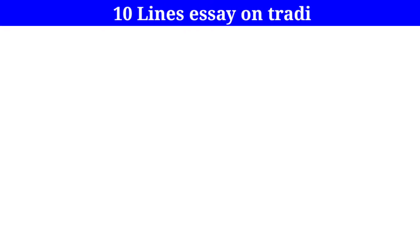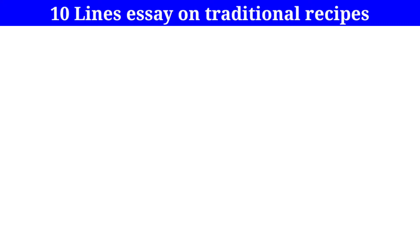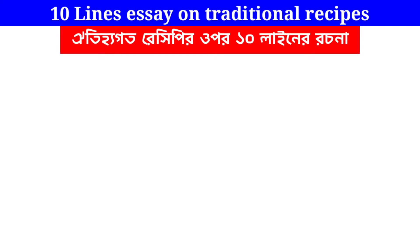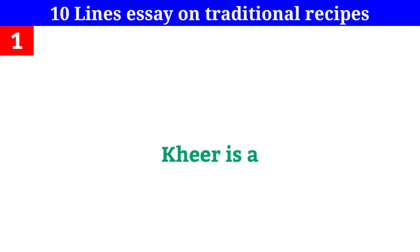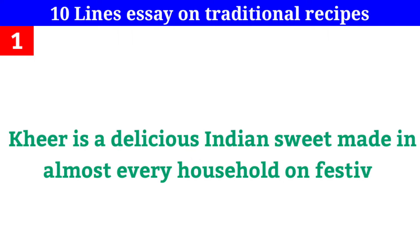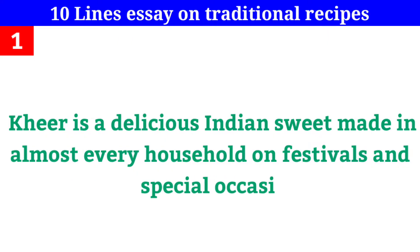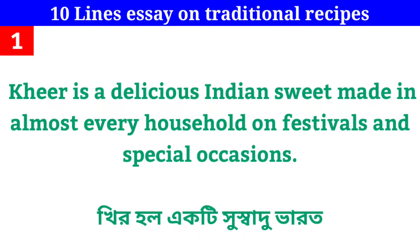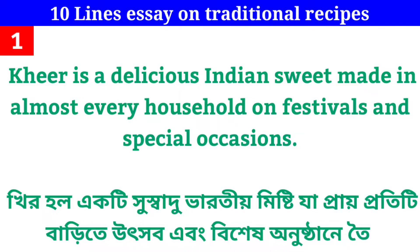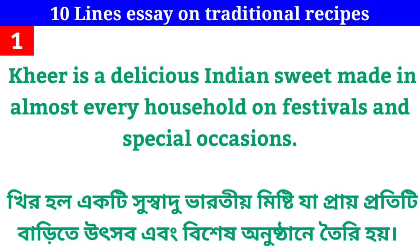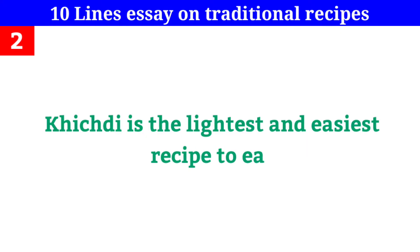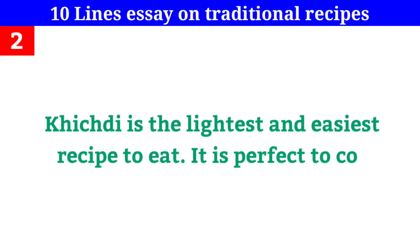10 Lines Essay on Traditional Recipes. Point 1: Kheer is a delicious Indian sweet made in almost every household on festivals and special occasions. Kheer is the lightest and easiest recipe to eat. It is perfect to cook for lunch.